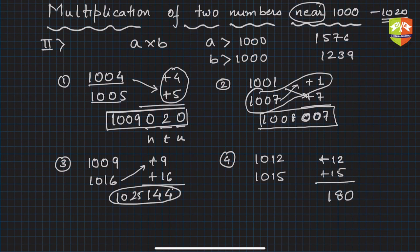So write 180 and 1027. Done. So 1015 plus 12 is 1027, which I am writing here. So this whole is the product.